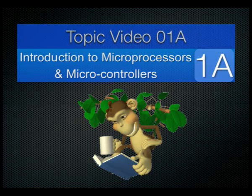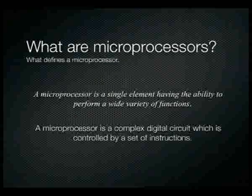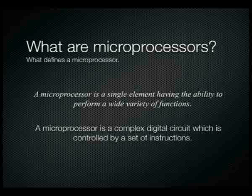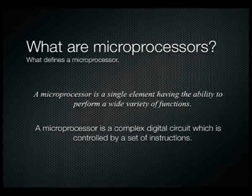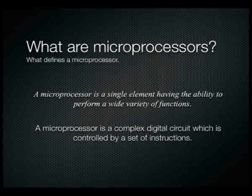Topic: Video 1A - Introduction to Microprocessors and Microcontrollers. A microprocessor is defined as a single element having the ability to perform a wide variety of functions. In reality, a microprocessor is nothing more than a series of complex digital circuits able to perform many multiple functions, where the action it performs is defined by stored instructions. It is a series of combinatorial logic blocks that are either activated or deactivated depending on the instruction the processor is executing at that particular point in time.